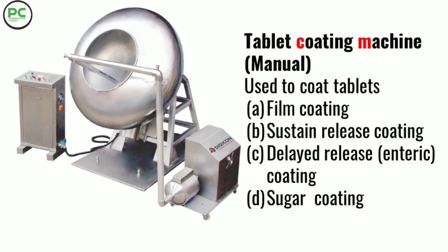Tablet coating machine (manual) is generally used to coat tablets. Coating types include film coating, sustained release coating, delayed release coating, enteric coating, and sugar coating, all done using this coating machine.